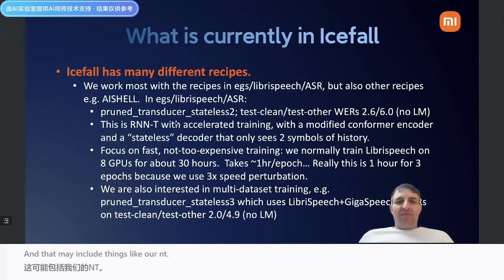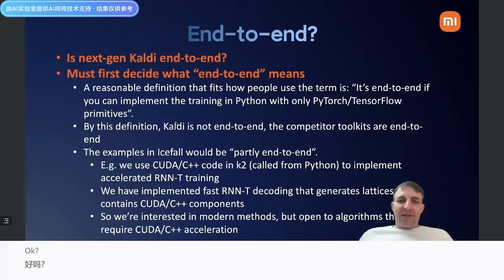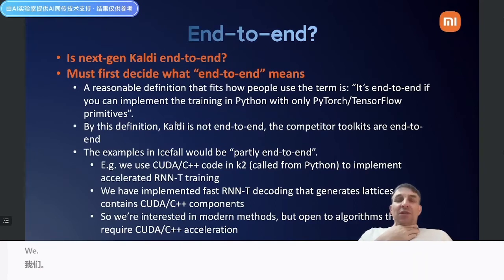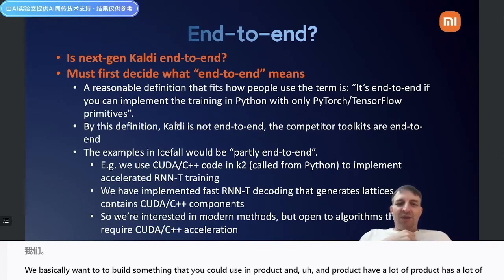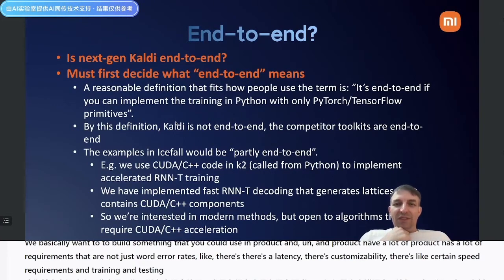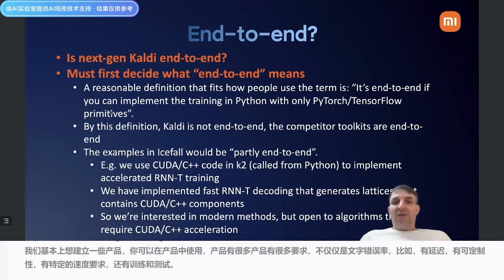Before going further, let me say more about the general approach of our tools. We basically want to build something you could use in a product. Products have a lot of requirements that are not just word error rate — there's latency, customizability, certain speed requirements for training and testing. We're considering all of these things.